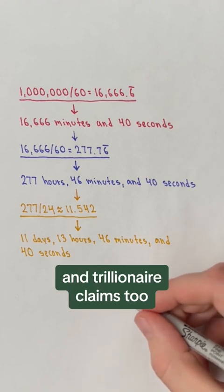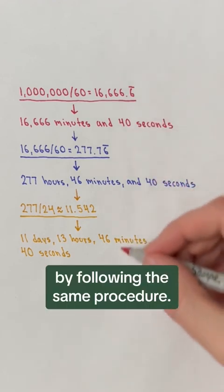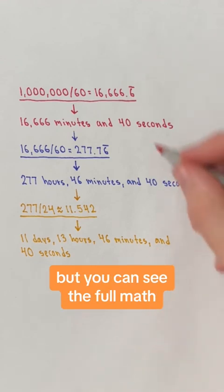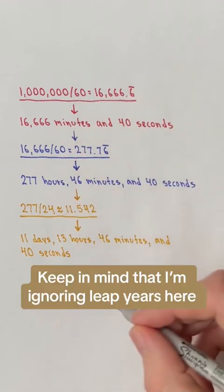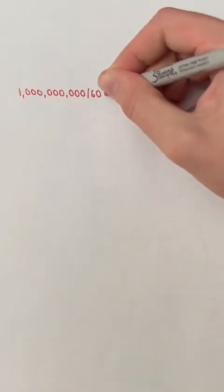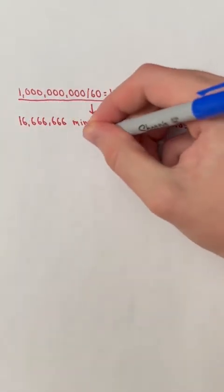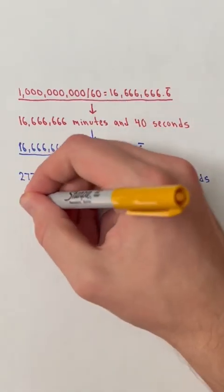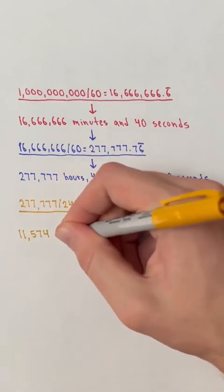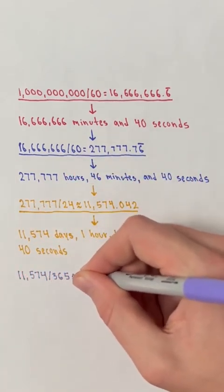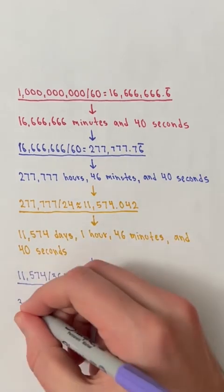We can test the billionaire and trillionaire claims too by following the same procedure. However, I'll simplify my commentary here, but you can see the full math on the screen. Keep in mind that I'm ignoring leap years here to make the math easier. We'll divide 1 billion by 60, divide 16,666,666 by 60, divide 277,777 by 24, and divide 11,574 by 365 to give 31 years.